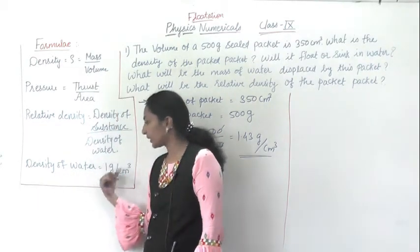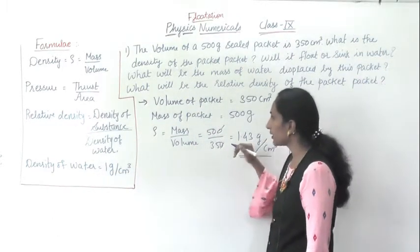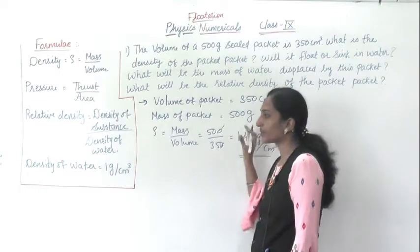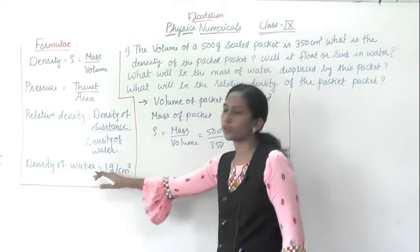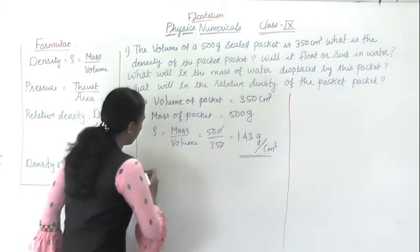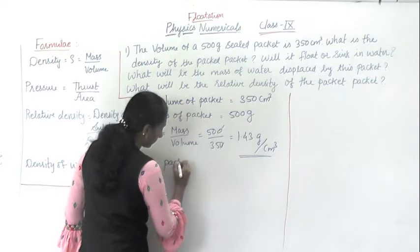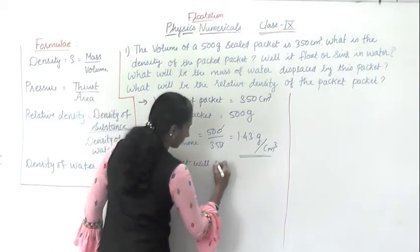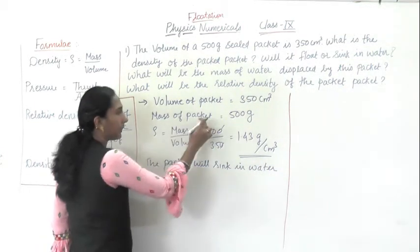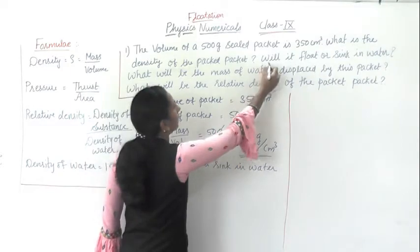We compare the density of the packet, which is 1.43 gram per centimeter cube, with the density of water, which is 1 gram per centimeter cube. The density of the packet is greater than the density of water, so the substance will sink in water. The packet will sink in water because the density of the packet is greater than the density of water. So the second question is also solved.